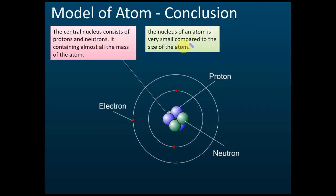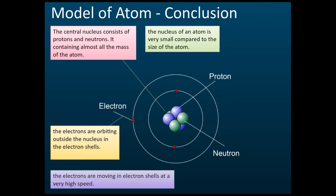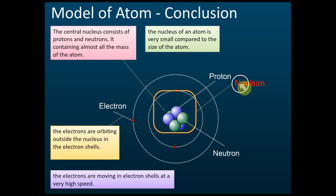The nucleus of an atom is very small compared to the size of the atom — it is less than 0.1% of the atom's size. The electrons orbit outside the nucleus in the electron shell, moving at very high speed. The particles inside the nucleus are called nucleons — therefore protons are nucleons and neutrons are also nucleons, because both proton and neutron are located inside the nucleus.